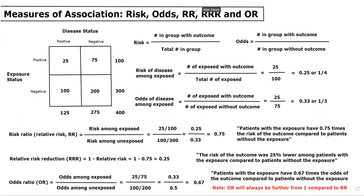First things first, we need to have a very solid understanding of the difference between risk and odds. The risk is the number of people in a group with the outcome divided by the total number of people in the group, and the odds is the number of people in a group with the outcome divided by the number of people in the group without the outcome.